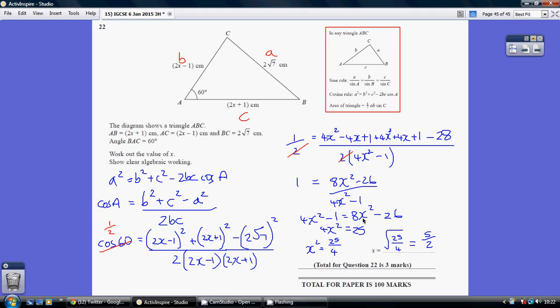Gathering all my x squares to the right-hand side by taking away 4x squared, I get 4x squared equaling, and then adding 26 to both sides, I get equaling 25. So 4x squared equals 25. Dividing by 4, x squared equals 25 over 4. And square rooting, I get x being 5 over 2.